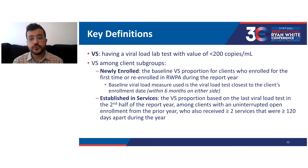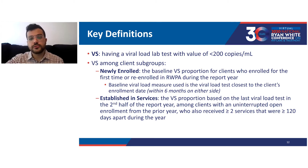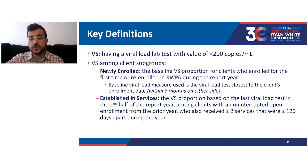Let's define some key terms used in the report. Viral suppression is defined as having a viral load lab test with a value of less than 200 copies per milliliter. Clients with no viral load test results during the year were considered unsuppressed. Newly enrolled is defined as the baseline viral suppression proportion for clients who enrolled for the first time or re-enrolled in Ryan White Part A funded programs during the report year, using the viral load test closest to the enrollment date within six months on either side.